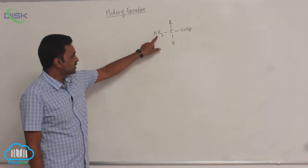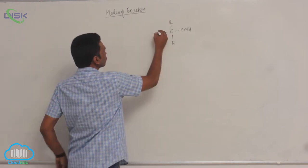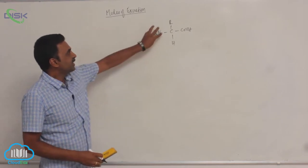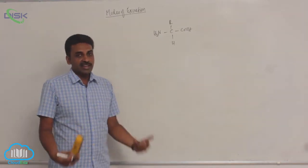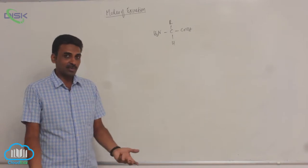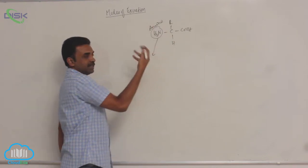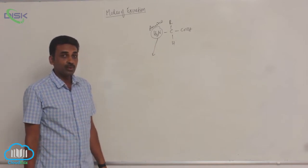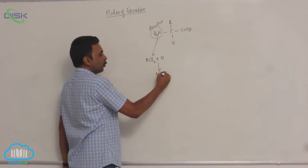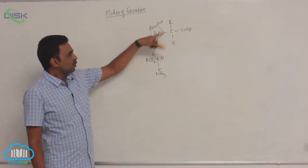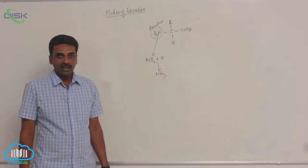A simple amino acid has an NH2 group (amino group) on one side and a COOH (carboxylic) group on the other side. When we take extra proteins or extra amino acids, this amino group is removed. The process of removal of the amino group is called de-amination. It combines with hydrogen to form ammonia.